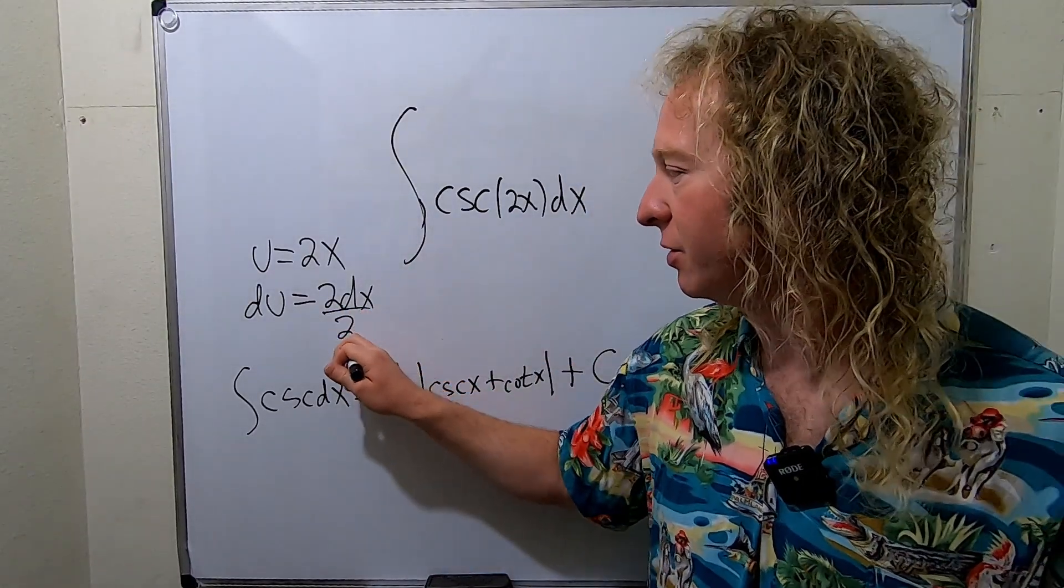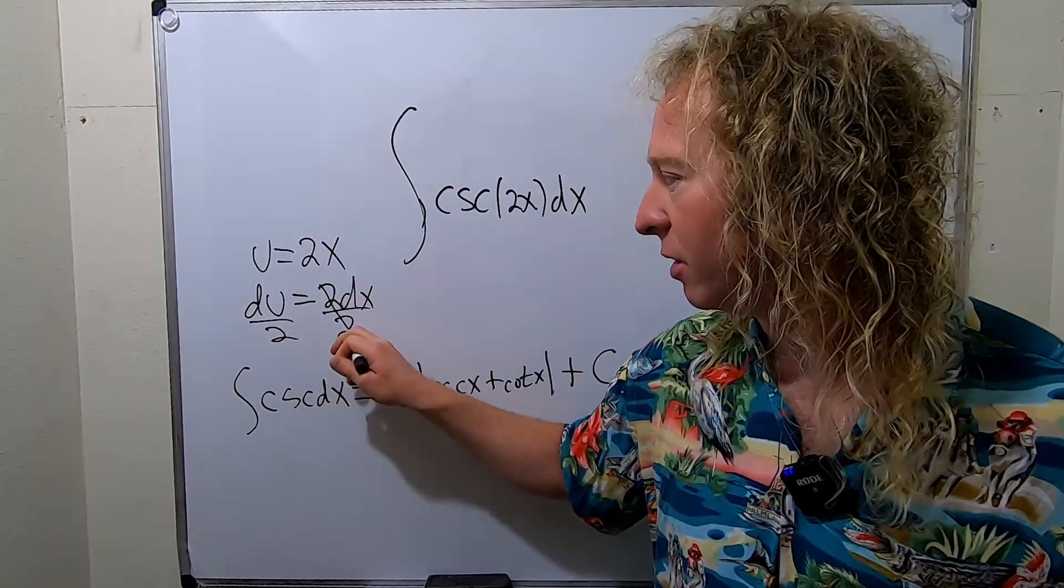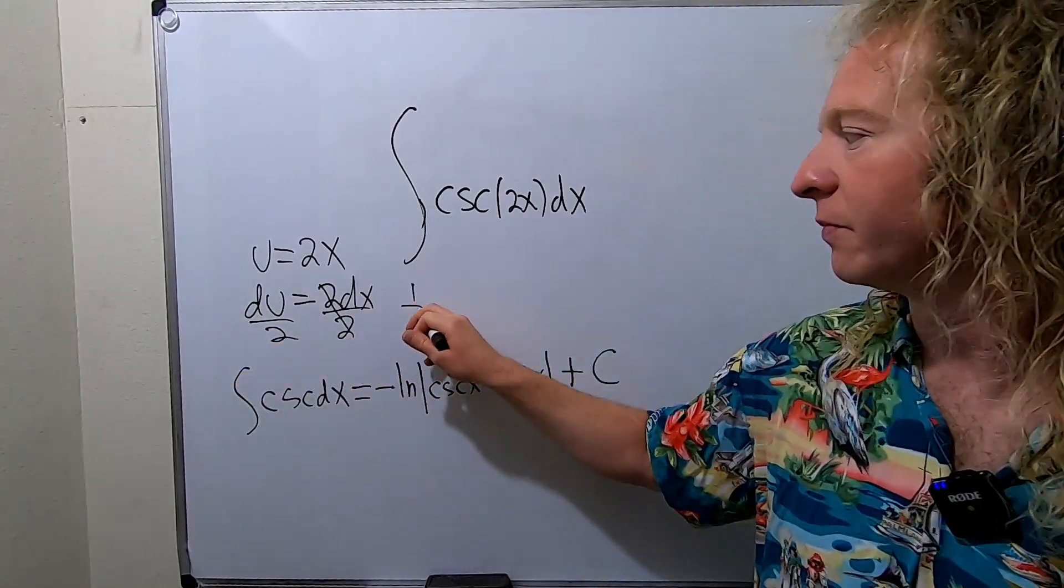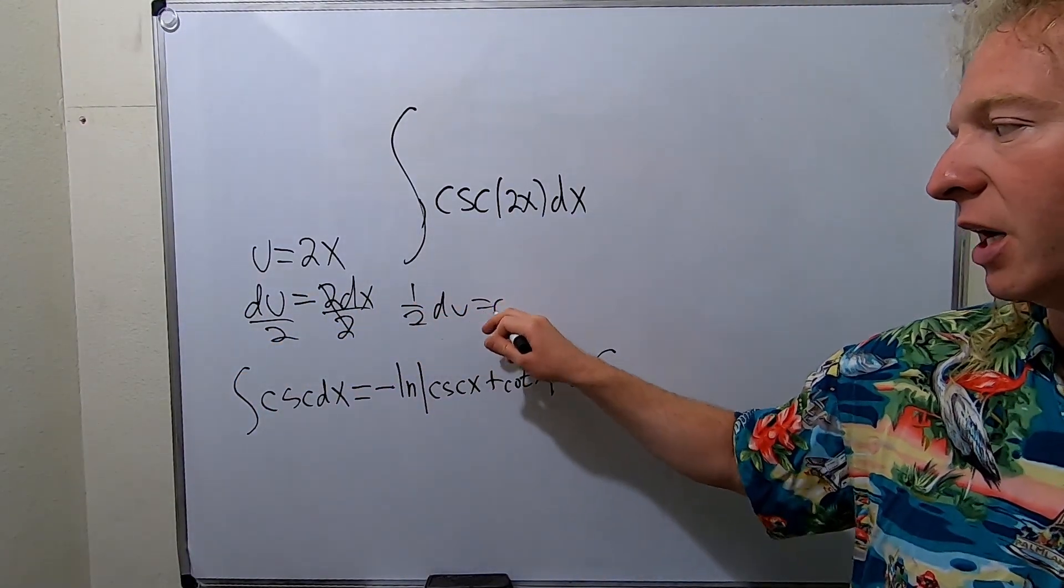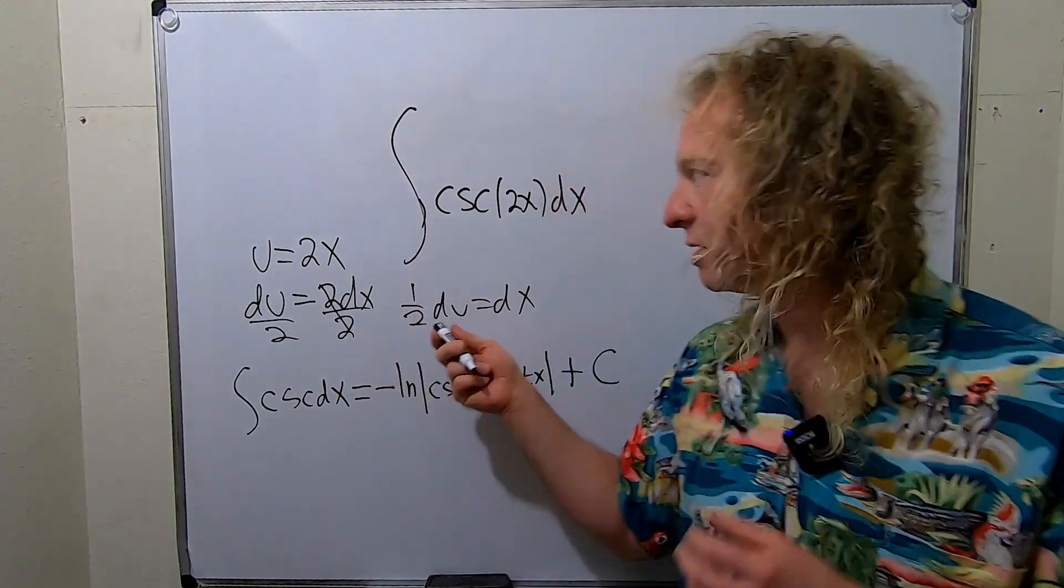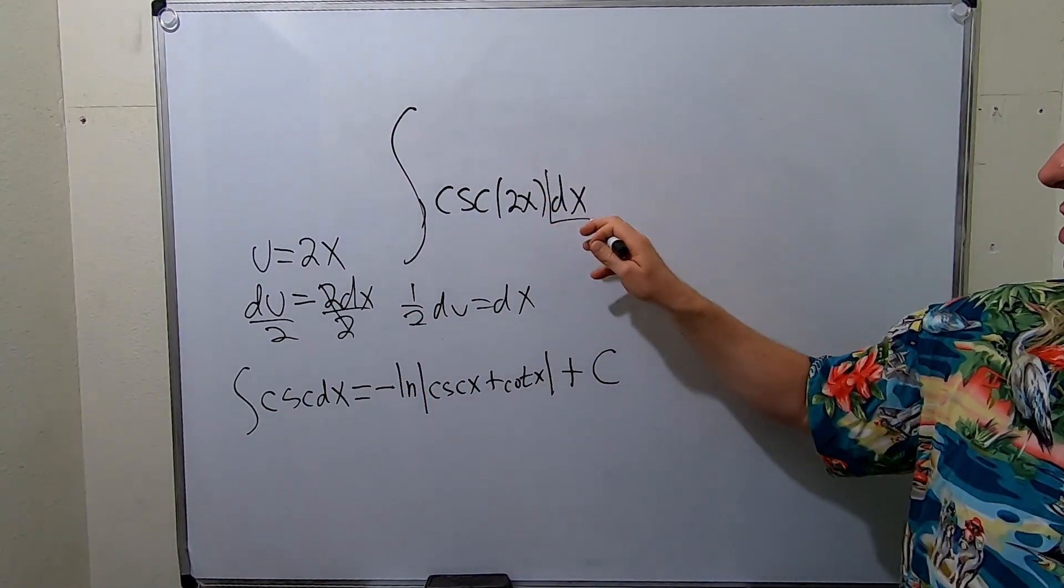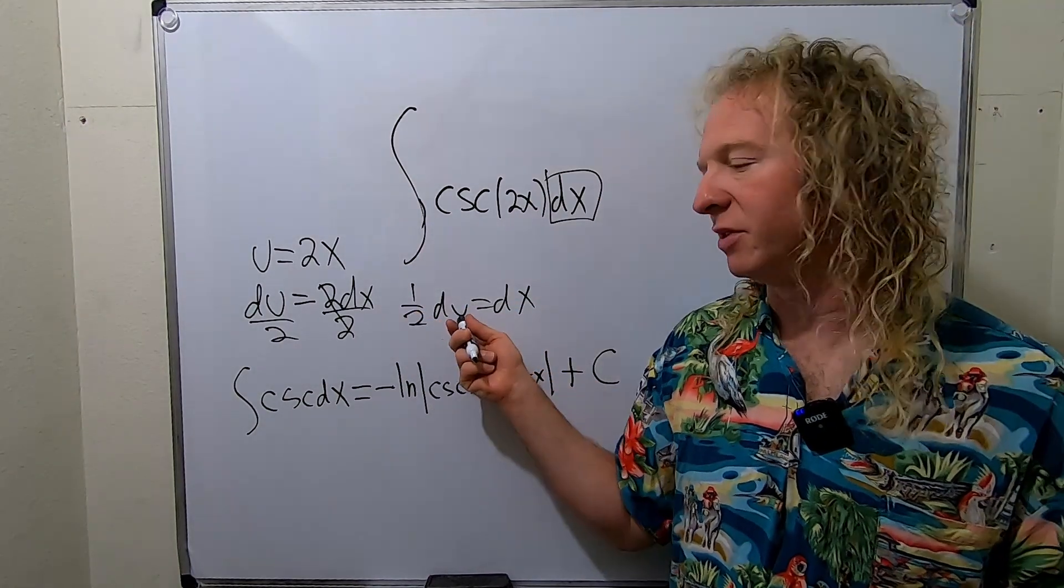So what you do is you divide both sides by 2. That gives us 1/2 du equals dx. The reason I write it like this is because in the next step we're going to replace dx with 1/2 du and we're going to pull out that 1/2.